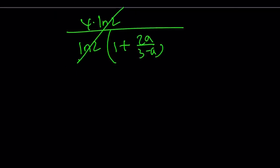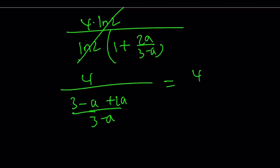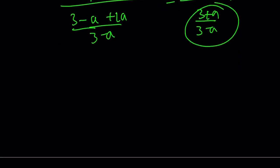Go ahead and simplify this, and you're going to get the same answer. Let's do it. 4 over (3-A) plus (2A)/(3-A). I'm going to make the fraction bar larger or longer so people don't complain about it. (3+A)/(3-A). Flip and multiply. So 4 times (3-A) is 12-4A divided by 3+A.